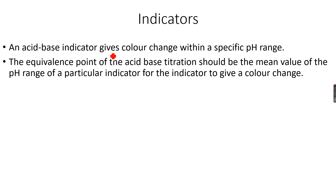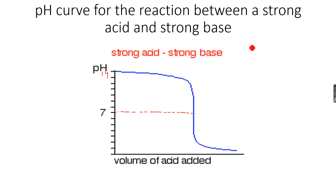An acid-base indicator gives a color change within a specific pH range. For example, when starting with the base, the indicator will have one color. Take litmus: litmus is blue in a base, and as we keep adding acid and cross the neutralization point, we see red because litmus is red in acids. So we see a color change as acid is added to the alkali.